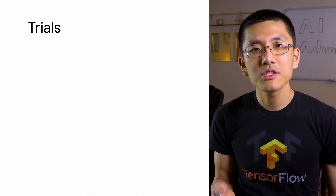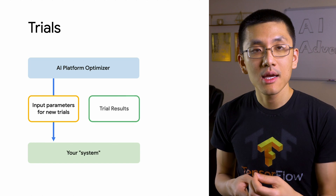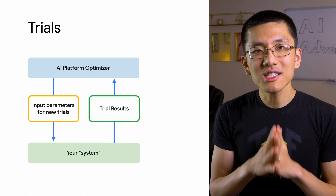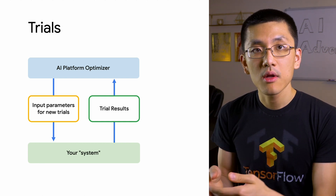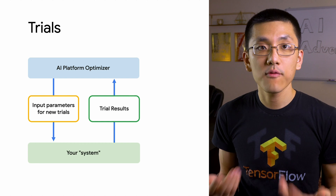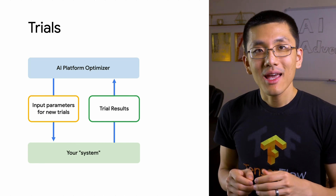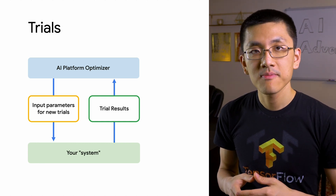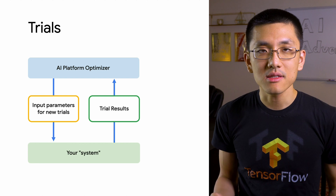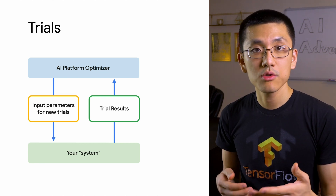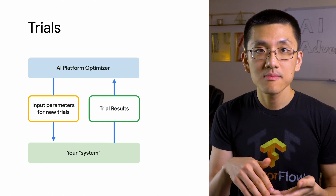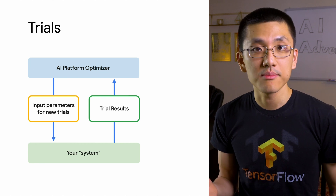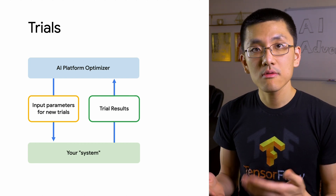A trial is a specific set of input values that produce some measured outcome. AI Platform Optimizer only suggests input values for each trial, but it doesn't run your trials for you — that is your task. A study will continue until it reaches a preset limit of trials, or you end it. As a service, AI Platform Optimizer suggests trials for you to run, records the outcomes of those trials, and then uses machine learning to suggest future trials based on those outcomes. You can continue this cycle for as long as you please.